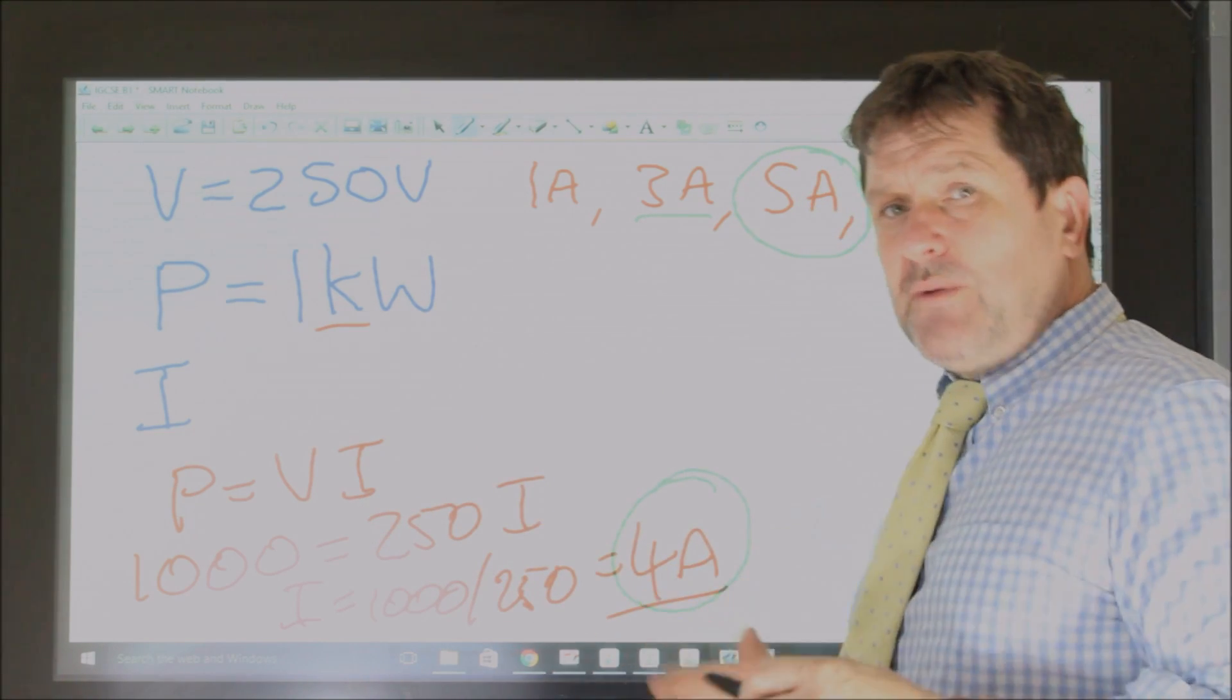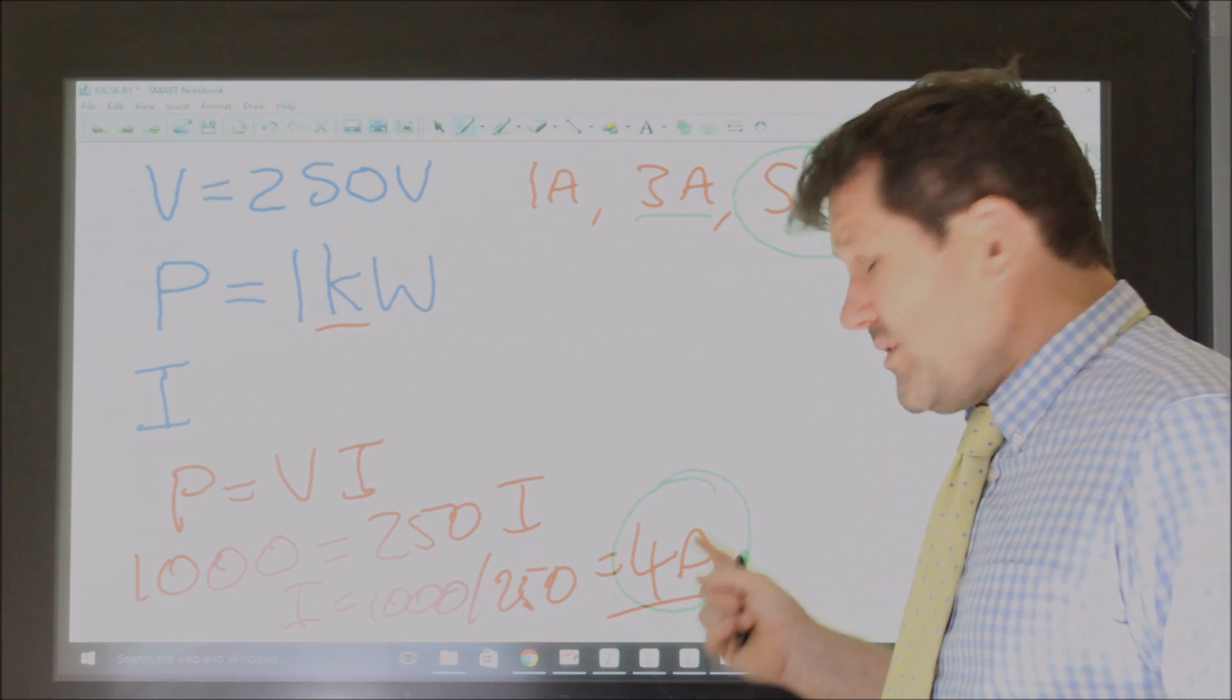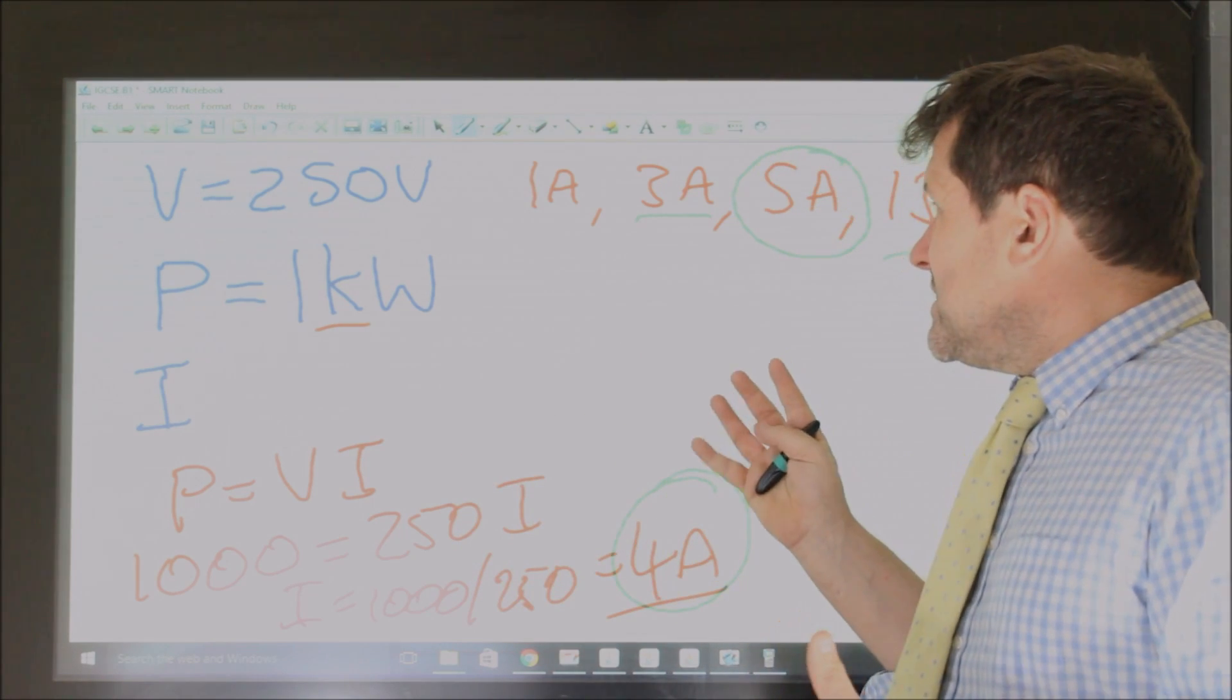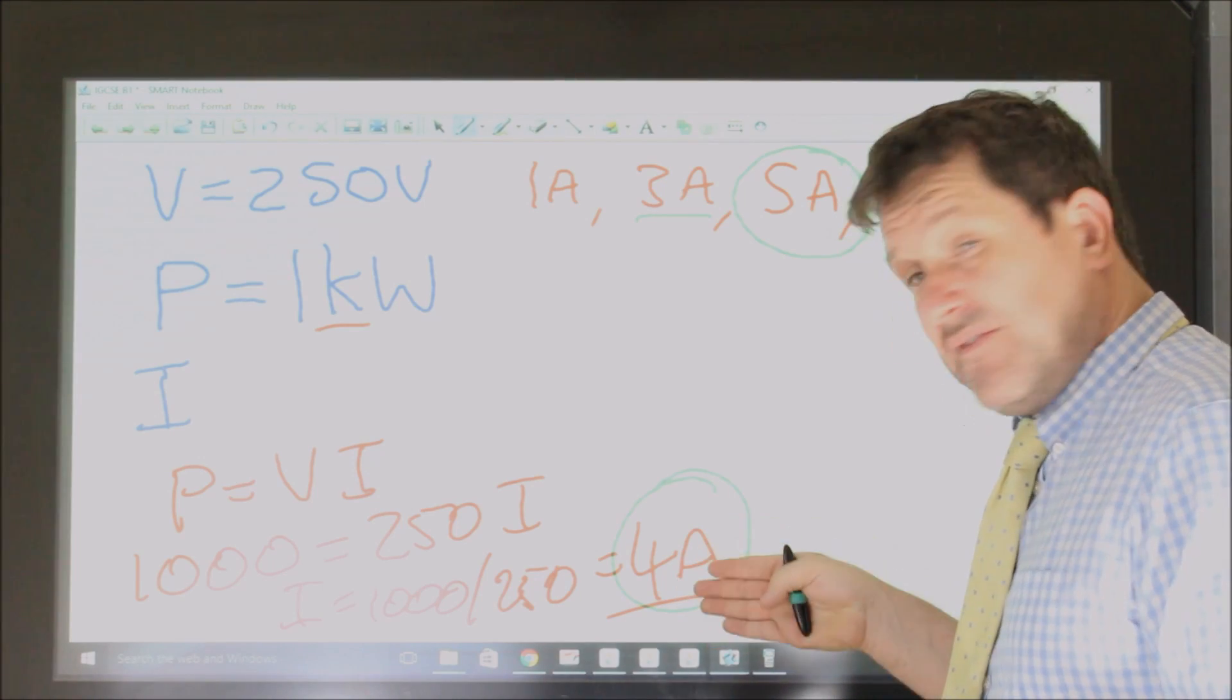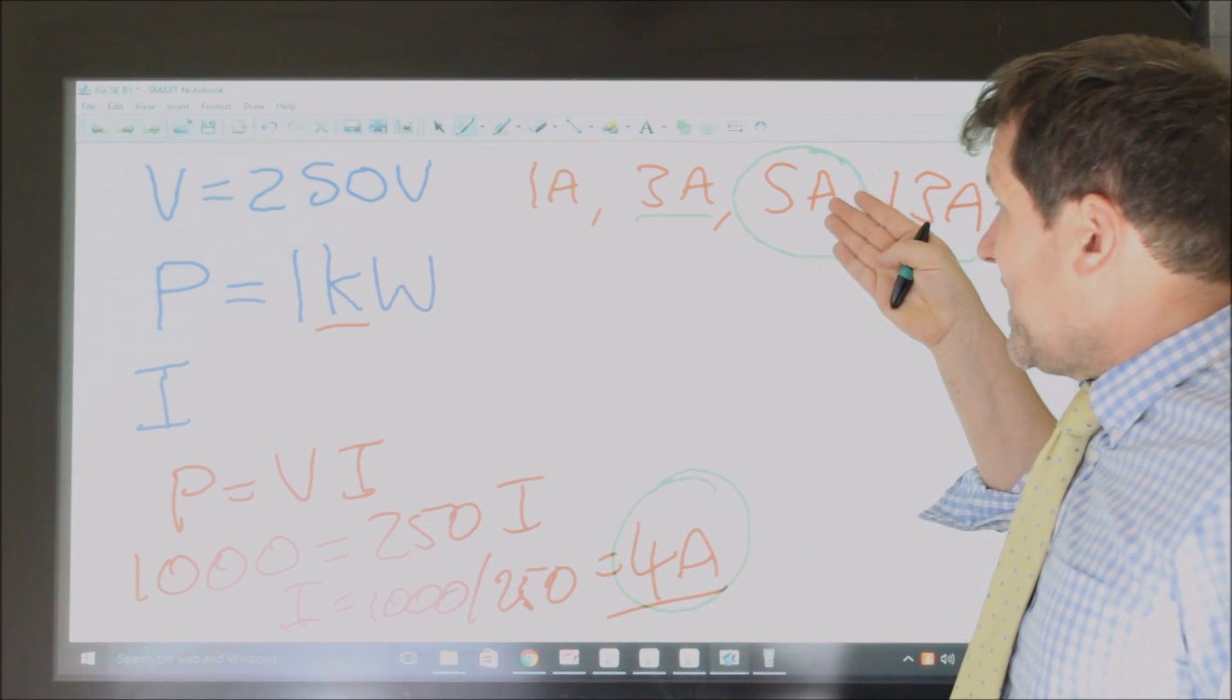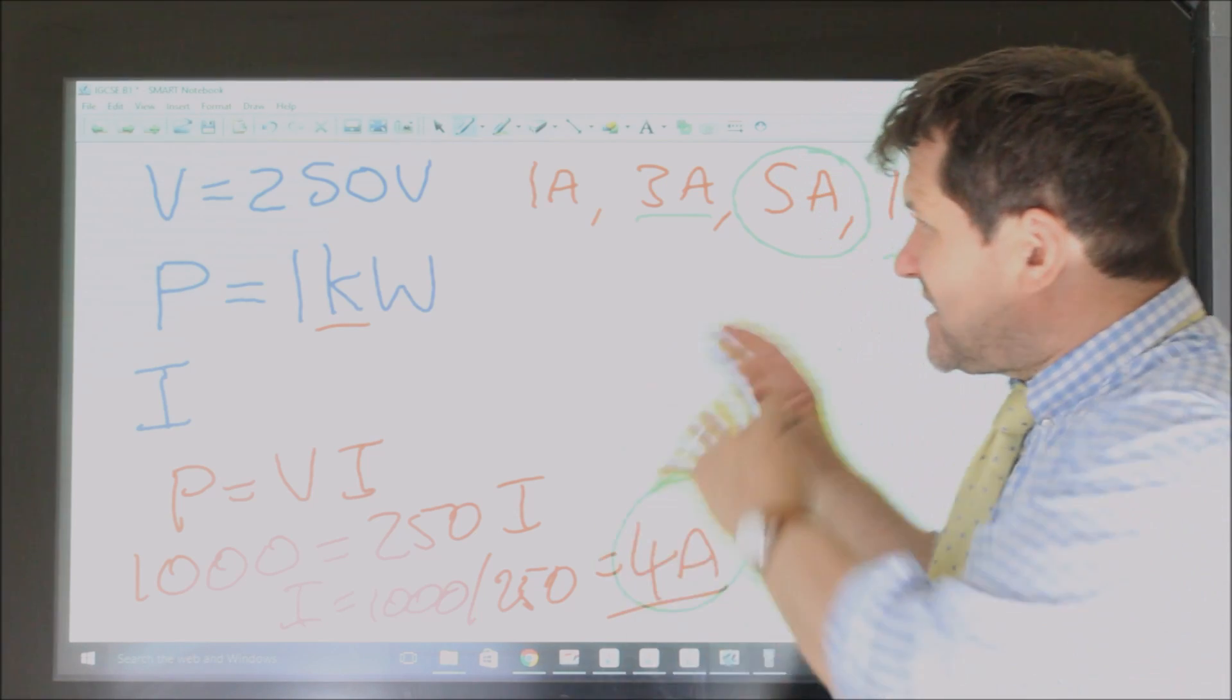You wouldn't pick a thirteen amp fuse though, because if there was a problem with the device, then it would require a very large surge in current, more than three times what is normal for that appliance, before the fuse would melt and render it safe. So a five amp fuse is the next high value after four. So the five amp fuse will break as soon as the current went up, however it would not break under normal circumstances. But it would break as soon as it went up by just 25%, then this thing would break.